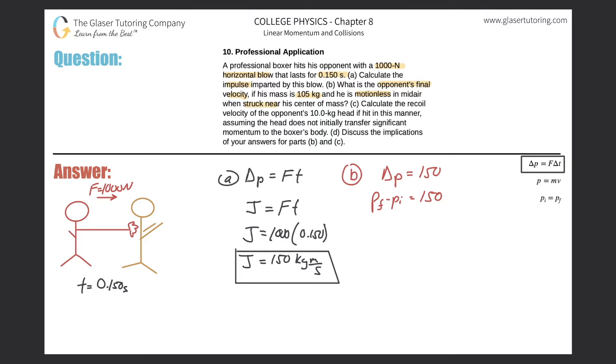I can rewrite this as simply mass times the final velocity minus the initial velocity. I derive that in other problems. Now what we're looking for is the final velocity. That's what it's asking: what is the opponent's final velocity?